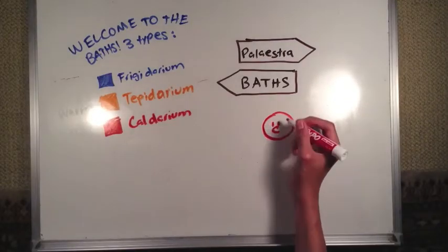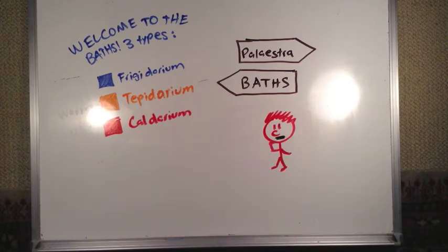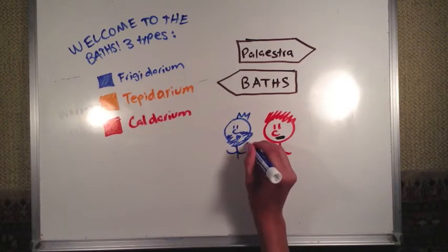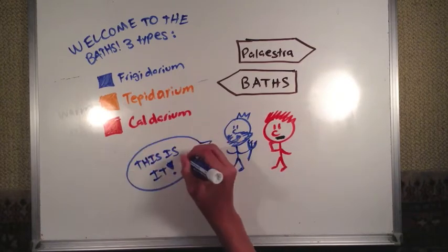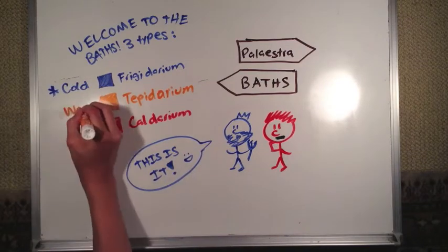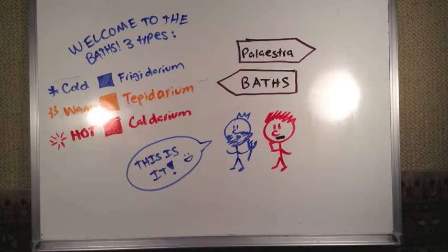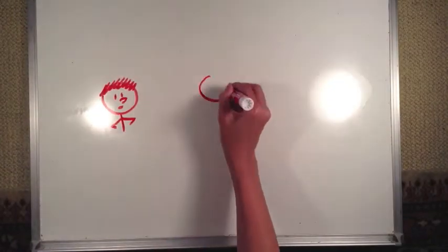You leave the palaestra and head to the reason you came here, to visit the baths. This is the tepidarium, the warm baths. After this we can either go to the frigidarium, the cold baths, or the caldarium, the hot baths. You think it's nice that the Romans give you a variety of options, and you decide to try them all.